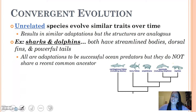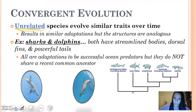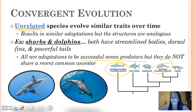Convergent evolution is when unrelated species evolve similar traits over time. They have similar adaptations, but these structures are analogous — they do the same thing but are different structures. An example is sharks and dolphins: both have streamlined bodies, tall dorsal fins, and powerful tails — all adaptations to be successful ocean predators — but they are not related and share no common ancestor. If you look at the cladogram, sharks are at one end and mammals like dolphins are at the total opposite end.